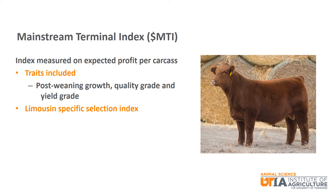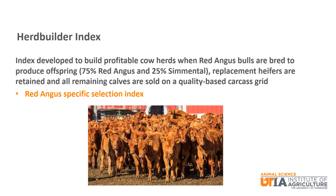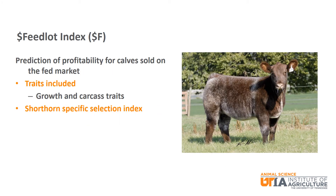Mainstream Terminal Index or Dollar MTI is a Limousin-specific index measured on expected profit per carcass. It includes post-weaning growth, quality grade, and yield grade in calculating the value. The Herd Builder Index is a Red Angus-specific index developed to build profitable cow herds when Red Angus bulls are bred to produce offspring that are 75% Red Angus and 25% Simmental, where replacement heifers are retained and all remaining calves are sold on a quality-based carcass grid. Feed Lot Index or Dollar F is a Shorthorn-specific index that is a prediction of profitability for calves sold on the fed market, including growth and carcass traits.